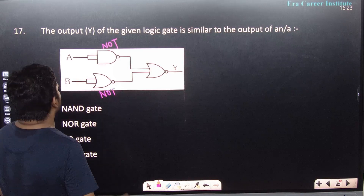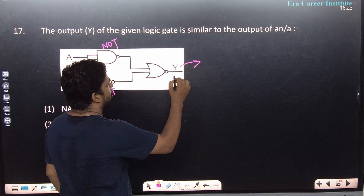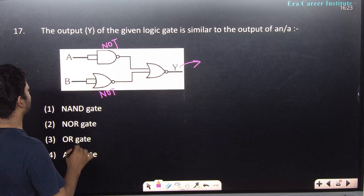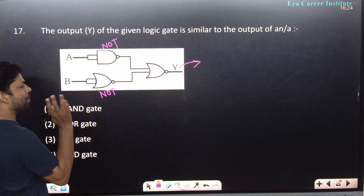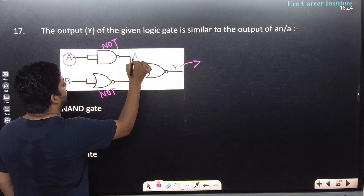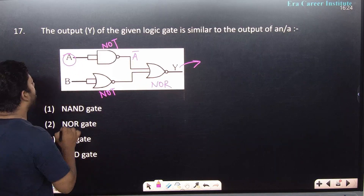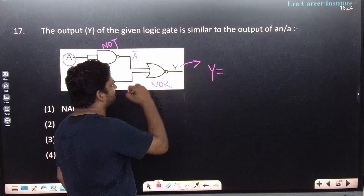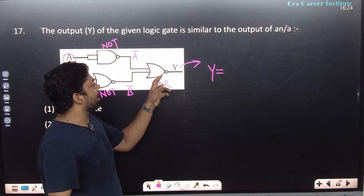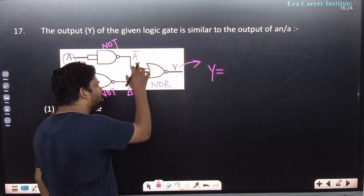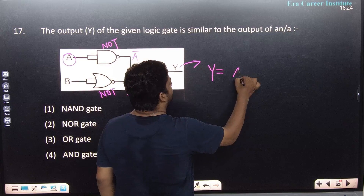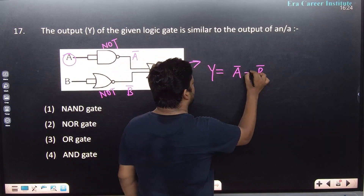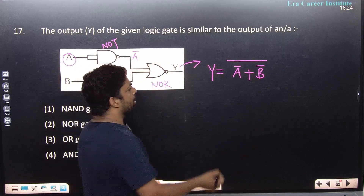Using Method 1 for mathematical expression: input A passes through a NAND gate with both inputs same, giving Ā; input B similarly gives B̄. These feed into a NOR gate. NOR gate takes inputs, ORs them, then inverts: output = (Ā + B̄)̄. This is one form of the expression.